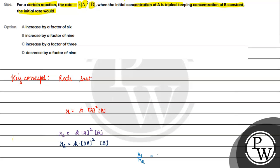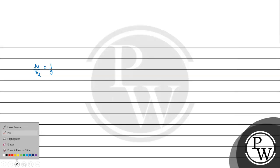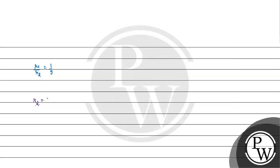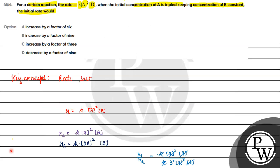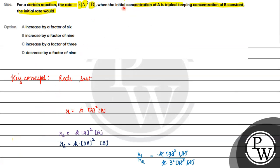R1 by R2 is equals to 1 upon 9. तो हम लिख सकते हैं, R2 is equals to 9 into R1. इसका मतलब क्या? कि जो original rate हमारा होगा उससे, जो R2 होगा 9 times ज़्यादा होगा. Increased by a factor of 9 आजाएगा.